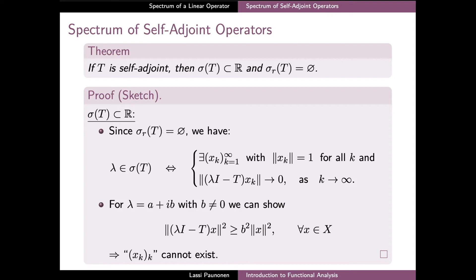Using this estimate, you can show that the sequence xₖ, the so-called approximate eigenvector in the first part, cannot exist when λ has a non-zero imaginary part.